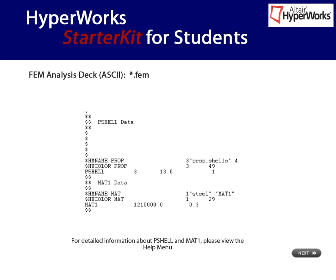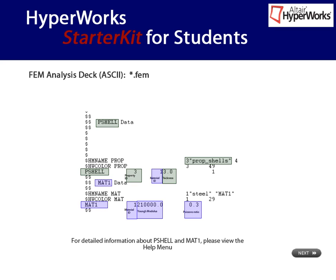Of course, the property and material definitions are also listed in the input deck. By now, you should be a bit familiar with the meaning of PShell and MAT1, as you have seen this kind of information while reviewing their card images in HyperMesh. Looking at the PShell card image, we see that the property with the ID 3 is referencing a material. In addition, a thickness of 3 mm is defined within the property card. Please review the MAT1 card image explanations as well.